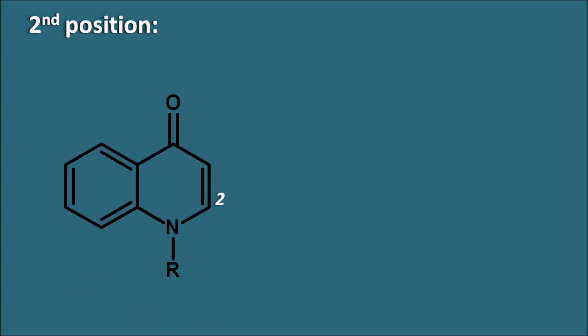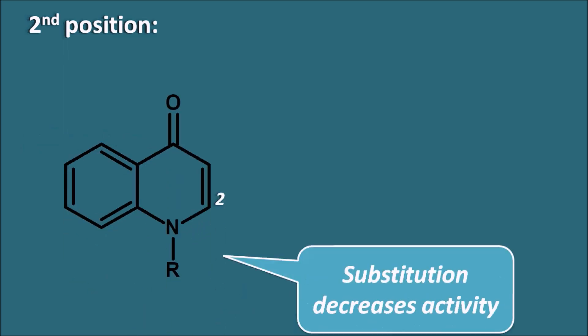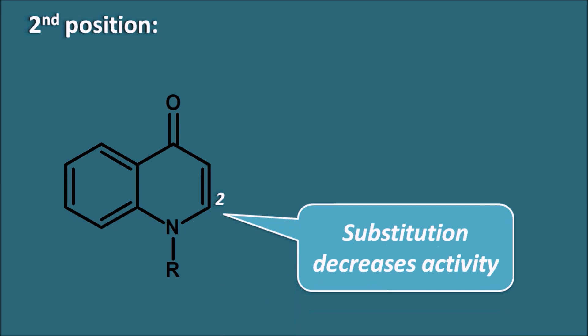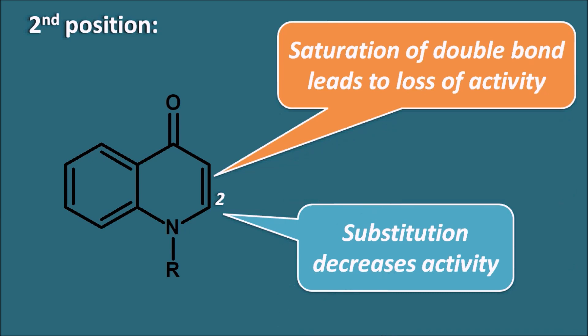At the second position, any substitution decreases the activity. The carbon at the second position can be replaced with nitrogen, but any group attached here reduces activity. Also, a double bond between the second and third positions is essential — saturation of this double bond results in a loss of activity. So a double bond must always be present between positions 2 and 3.